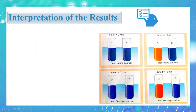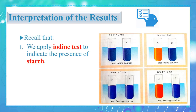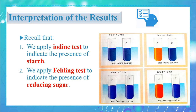Before we interpret the results, recall that we apply the iodine test to indicate the presence of starch, and we apply the Fehling test to indicate the presence of reducing sugar. We apply both tests because we are testing for two substances — starch and sugar. Each test is applied in both test tubes at the beginning and at the end of the experiment in order to observe the changes and compare the results.